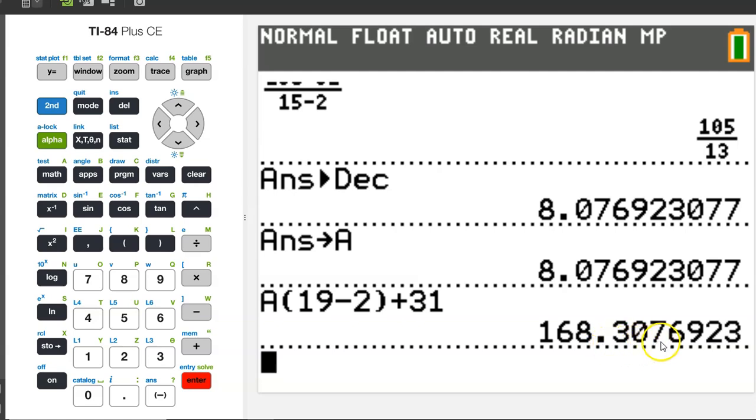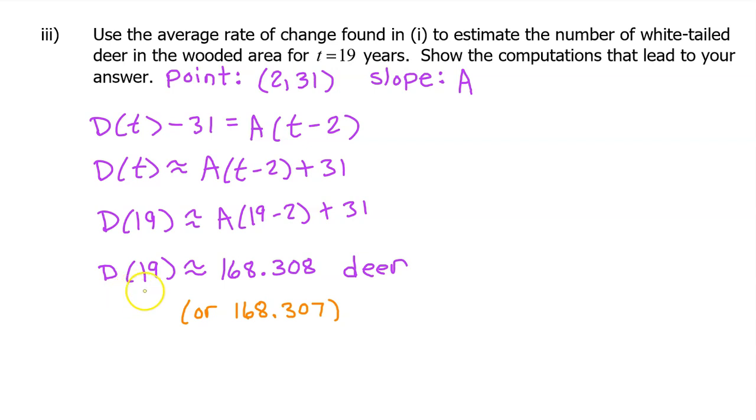168.307 if you like to truncate, or 168.308 if you like to round. At t equals 19 years, there are approximately 168.308 white-tailed deer in the wooded area.